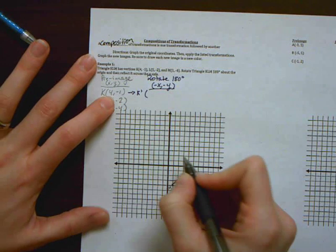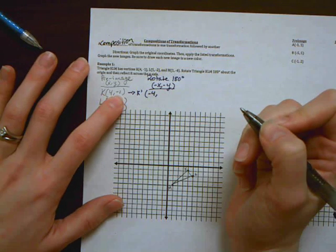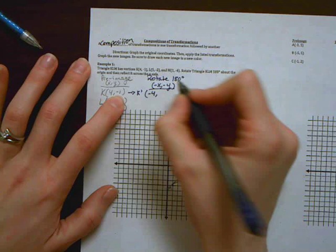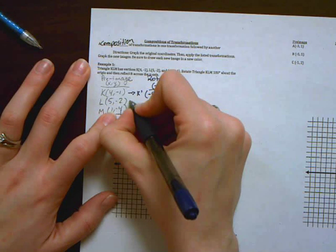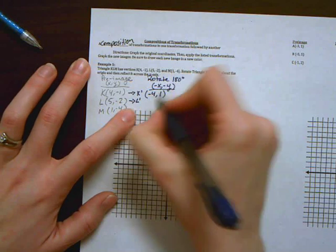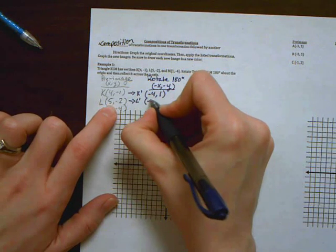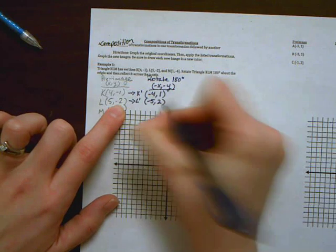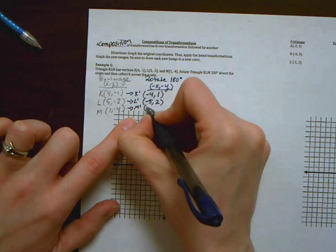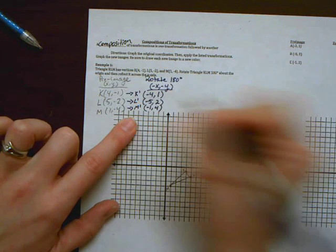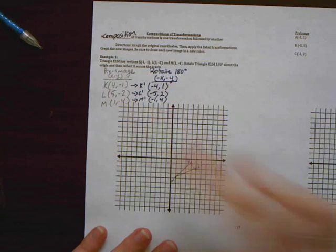So K prime, my x value started out positive 4. The opposite of that is negative 4. My y value started out negative 1. The opposite of negative 1 is positive 1. So that's my new K coordinate. L is going to follow the same pattern. 5 becomes negative 5. Negative 2 goes to its opposite, which is positive 2. And then M prime becomes negative 1 positive 4. So I'm just taking everything and making it its opposite.